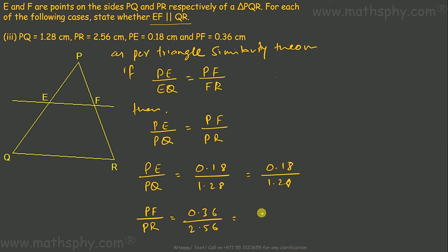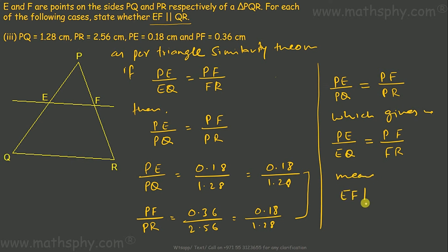Let's divide this by 2, so this gives me 0.18 over 1.28. 0.36 divided by 2 and 2.56 divided by 2 gives you 1.28. So here PE over PQ is equal to PF over PR which gives me PE over EQ is equal to PF over FR, means EF is parallel to QR. So here this will be yes.